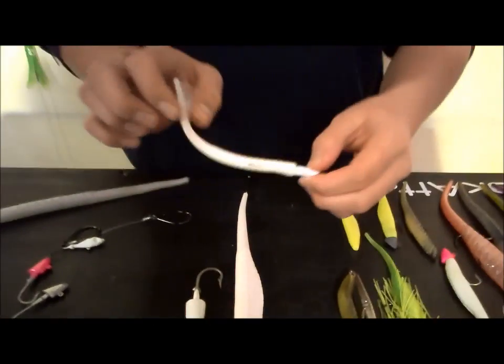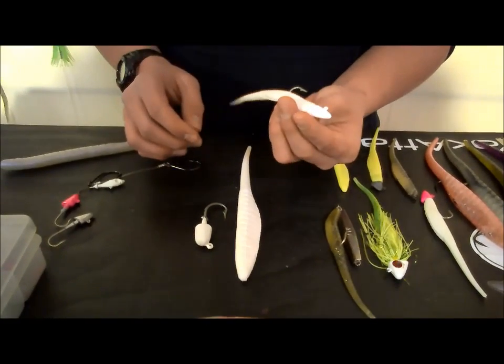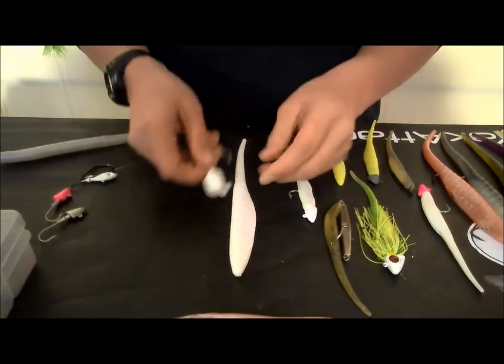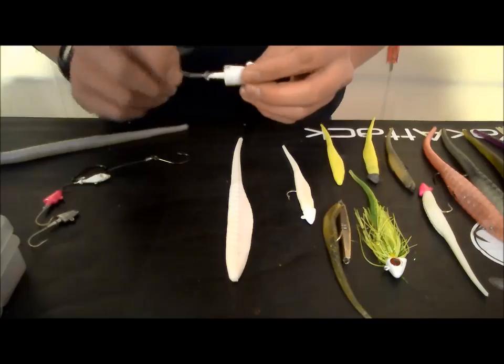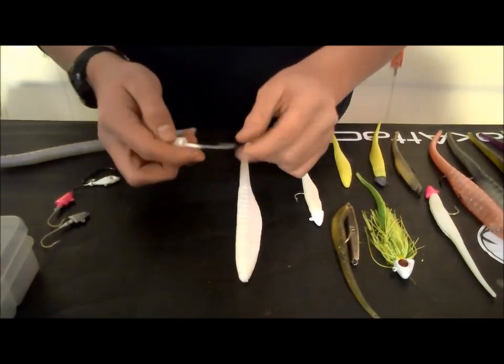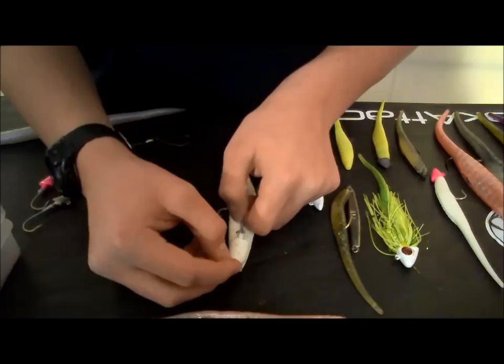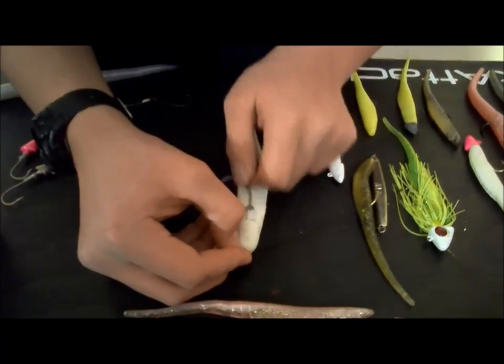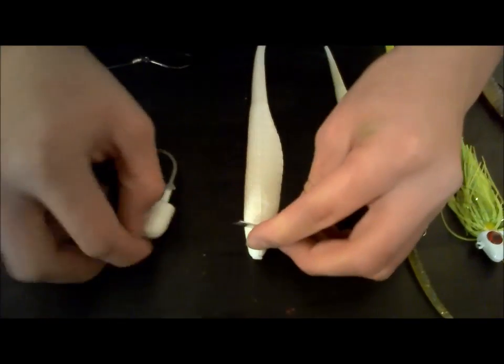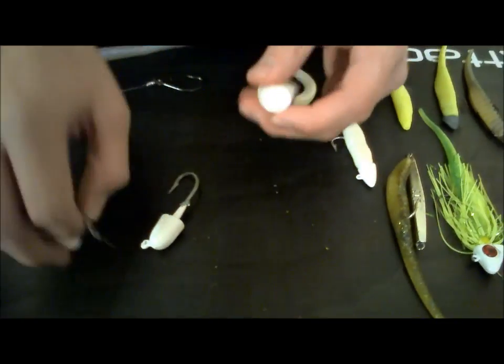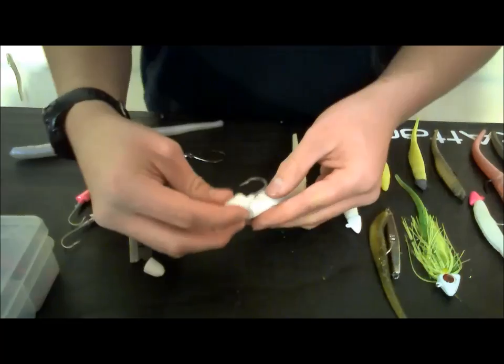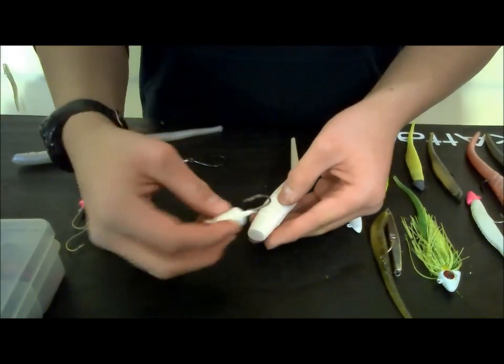The technique that we used earlier of rigging the six-inch BKDs with the jig head is now going to apply to the ten-inch BKDs. I have a much bigger jig head, I believe this is a one or one and a quarter ounce. So, same thing, line it up so it's flat, you can see right about there, take my razor blade, one straight cut down, cut it off, and that looks like it's going to line up okay.